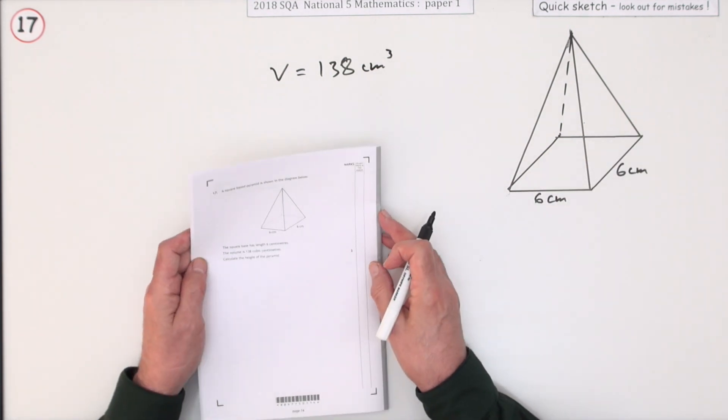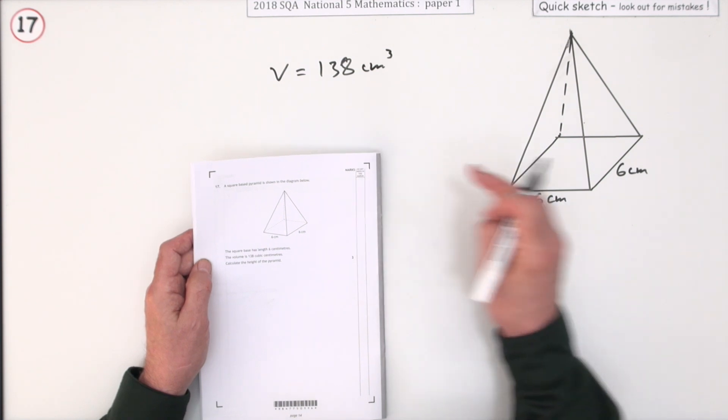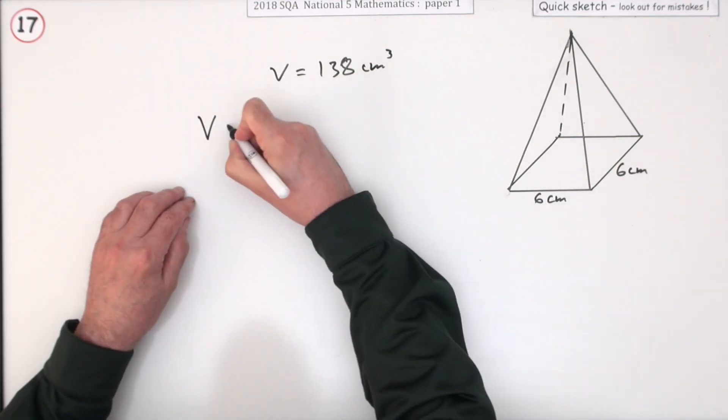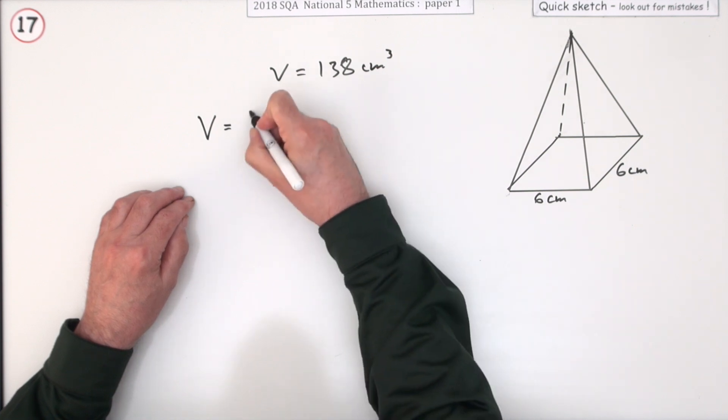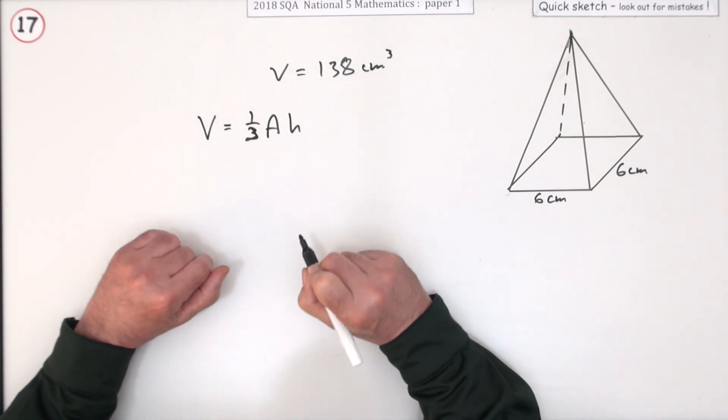Well you just need the formula that connects it all. What's the formula for the volume of a square based pyramid? Well you won't find that at the front, you'll just find the general formula. Volume of a pyramid is one third of the area of the base times the height.